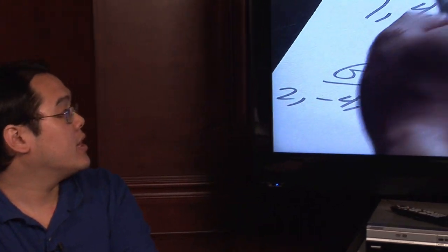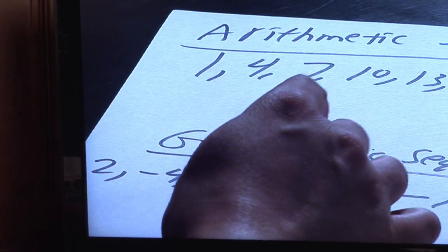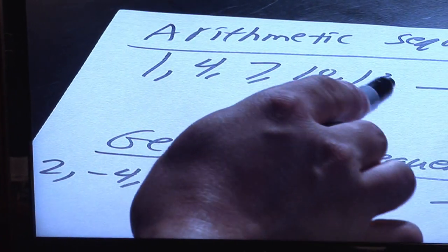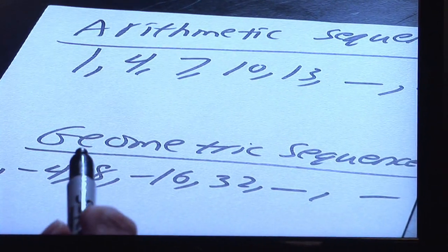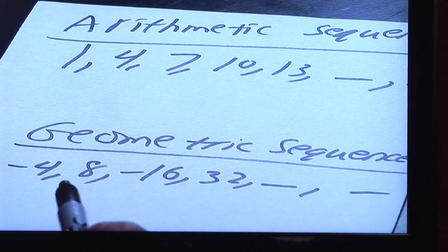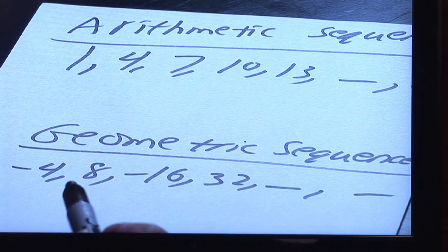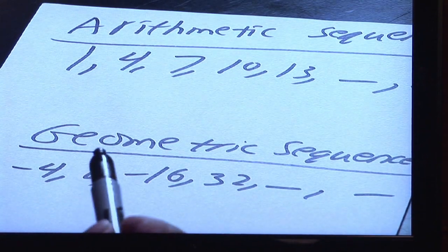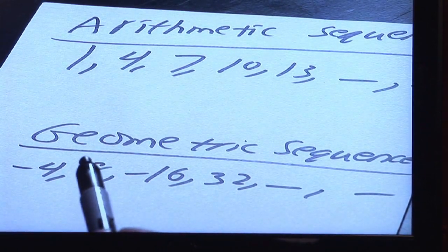Here's a basic example of this. Suppose you have 1, 4, 7, 10, and 13. After a while you can figure out easily what number did I have to add or subtract between each number to figure out what the terms are.